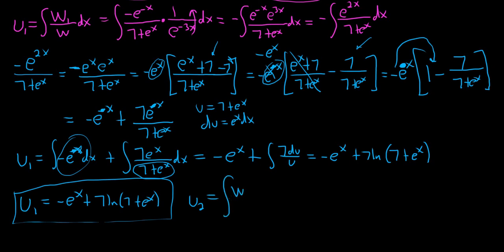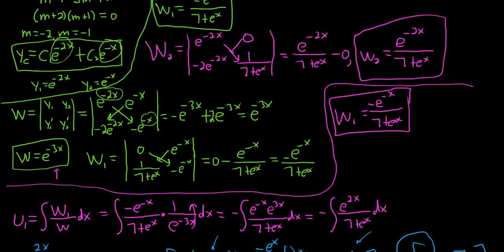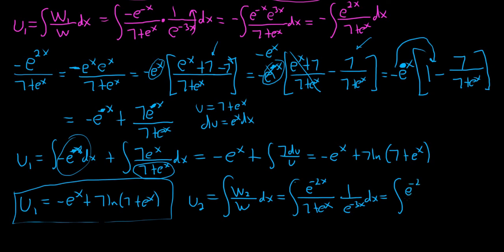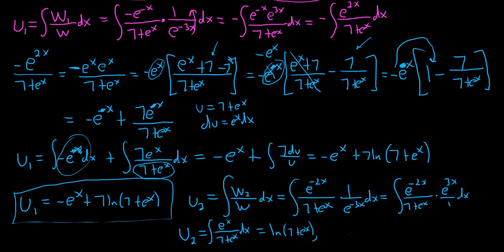u2 is the integral of W2 over W dx. W2 is e to the negative 2x over 7 plus e to the x, and dividing by W, which is e to the negative 3x, means multiplying by e to the 3x. The exponents combine, giving us the integral of e to the x over 7 plus e to the x dx. Using the same u-sub as before, u2 equals the natural log of 7 plus e to the x.